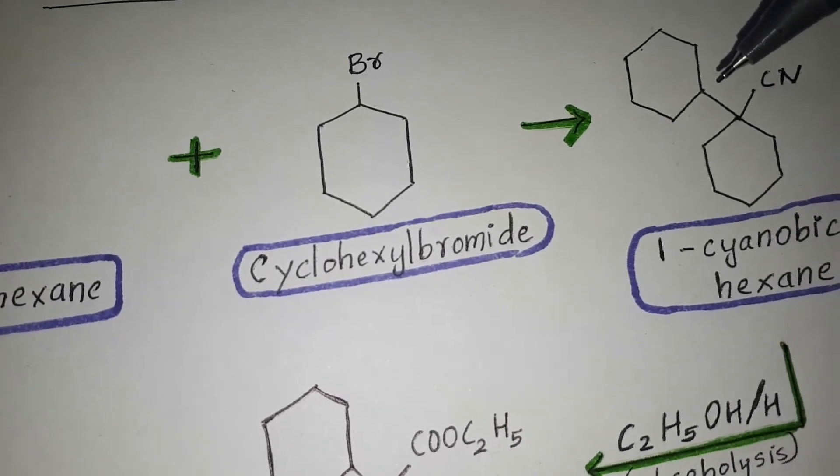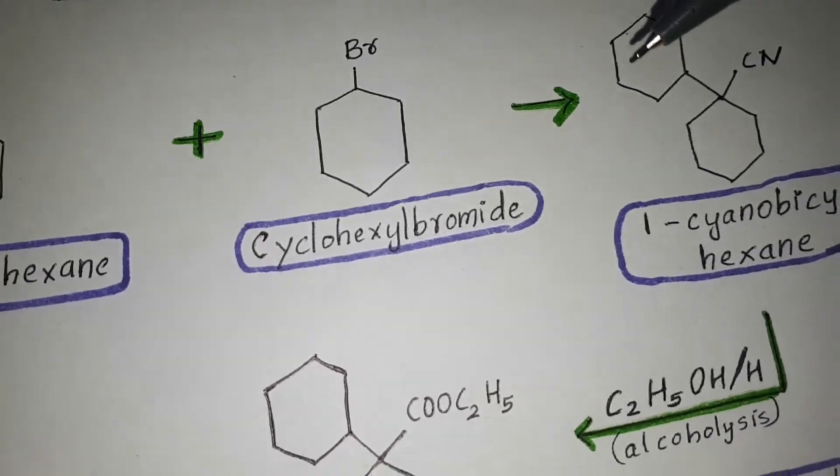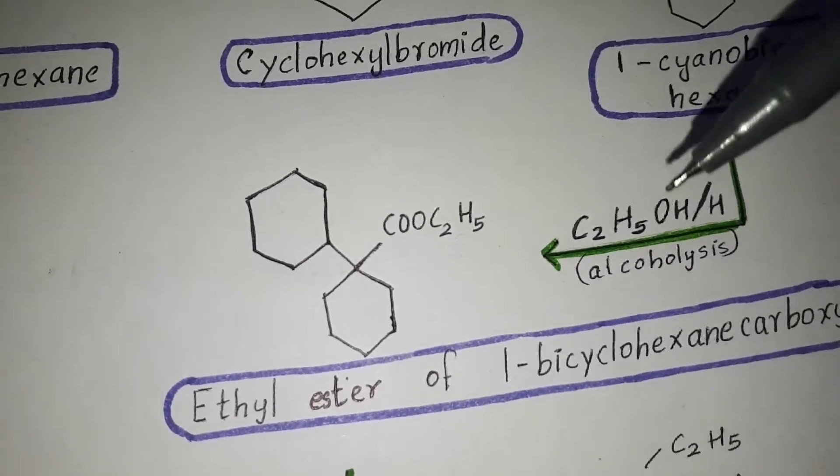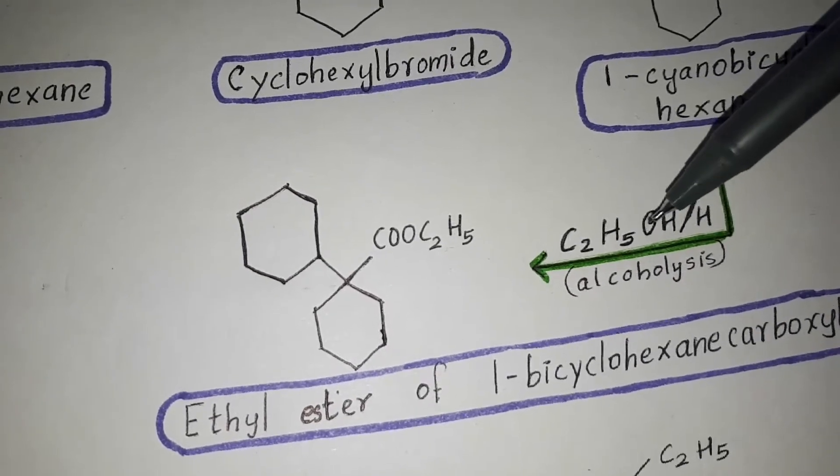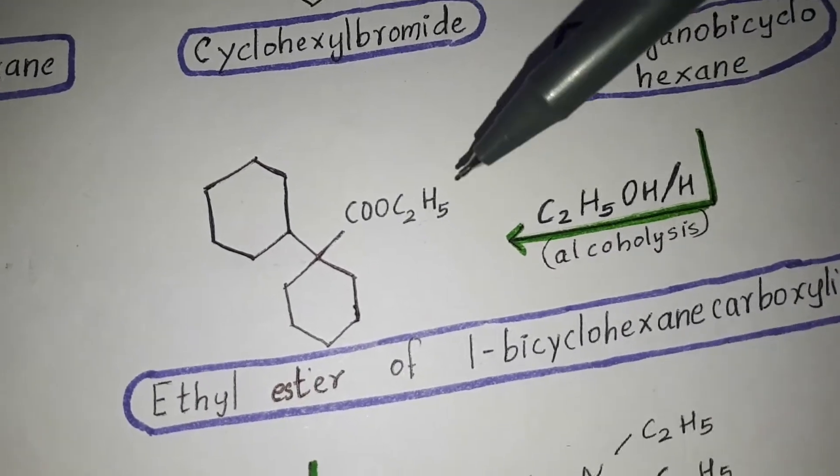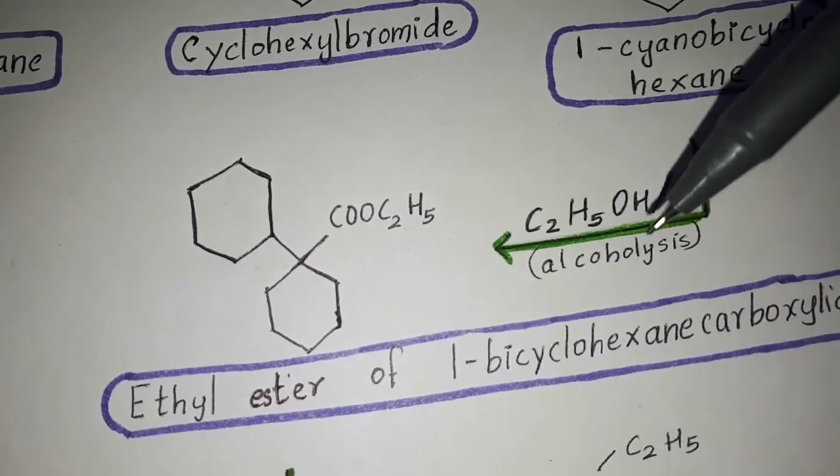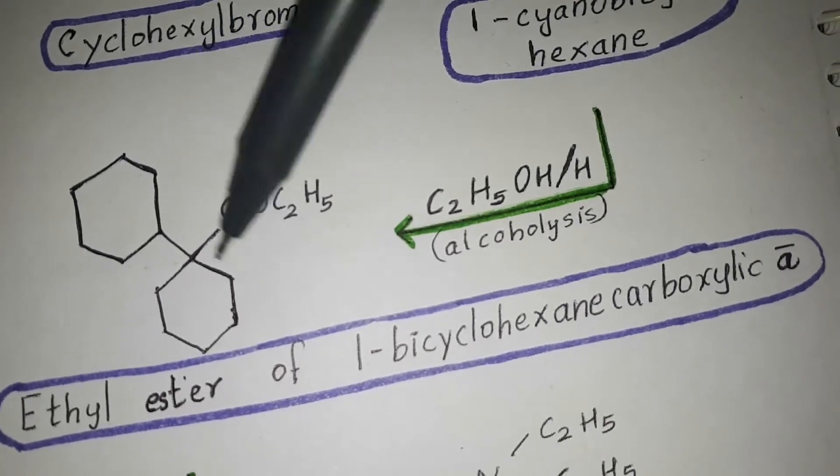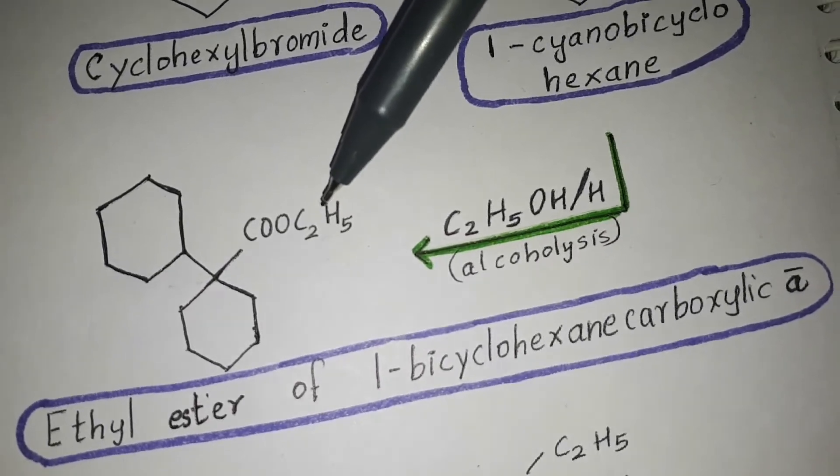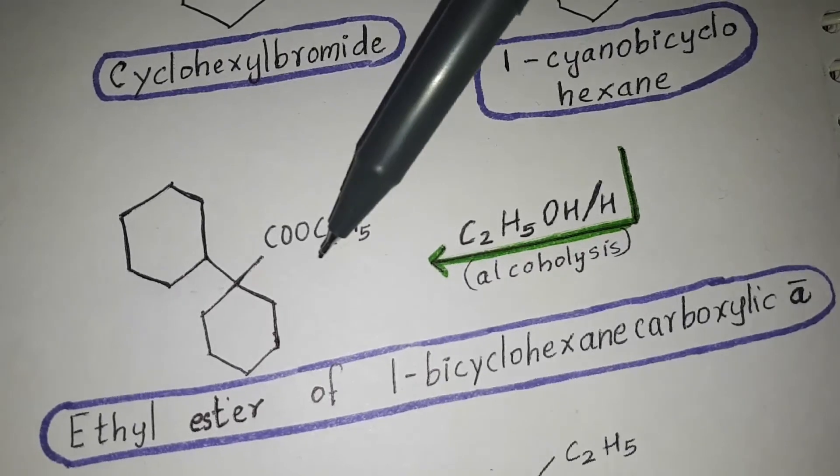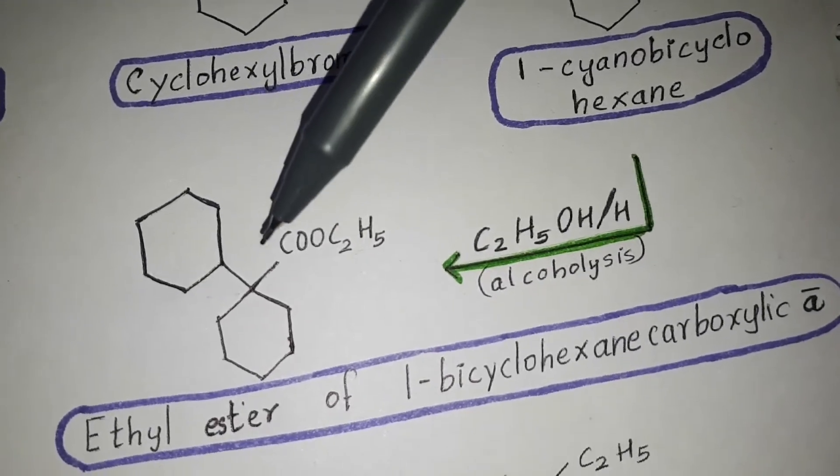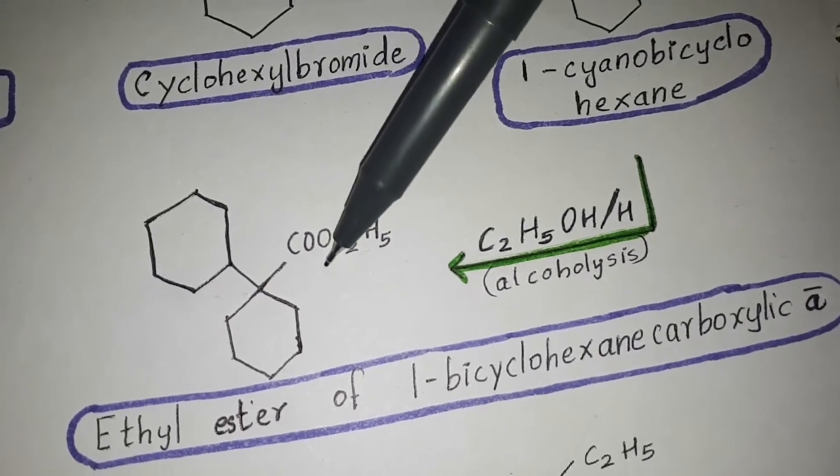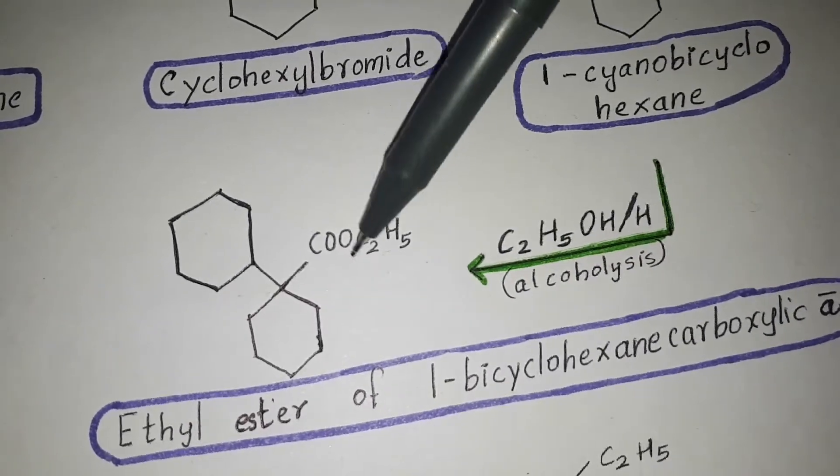This undergoes alcoholysis in the presence of alcohol C2H5OH to form ethyl ester of 1-bicyclohexane carboxylic acid.